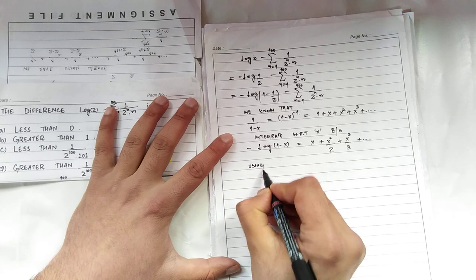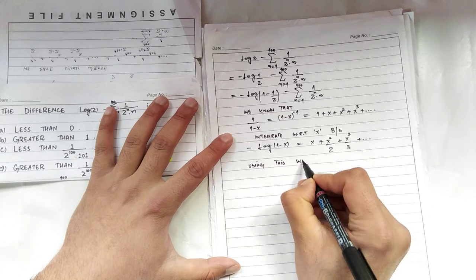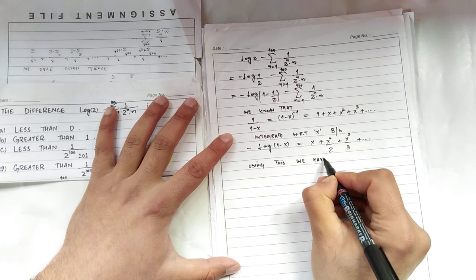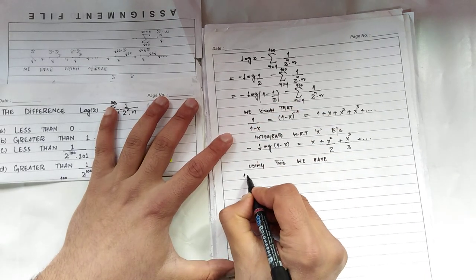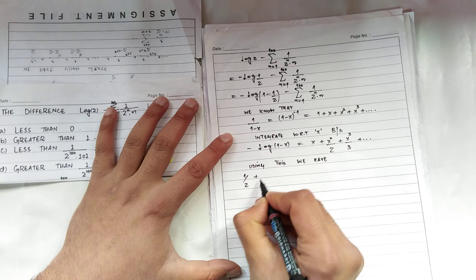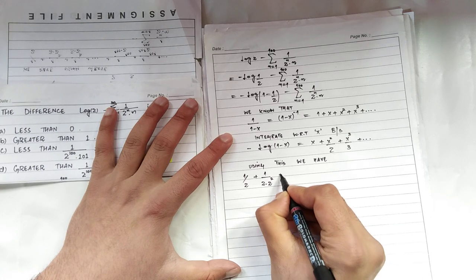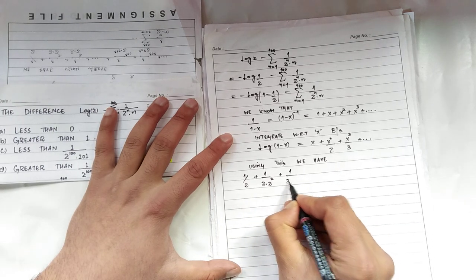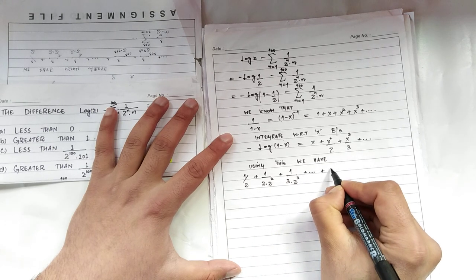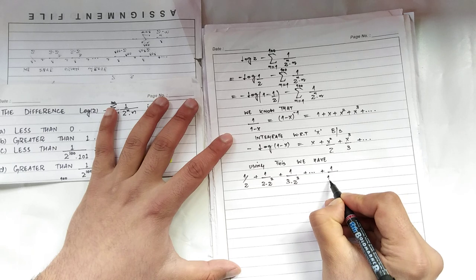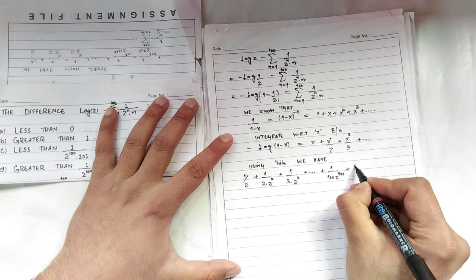Using this expression, I will just use this. So I will be having negative log of 1 minus 1 upon 2, which gives me 1 upon 2 plus 1 upon 2 square times 2 plus 1 by 3 times 2 cube plus so on. I will go up to 100 terms.